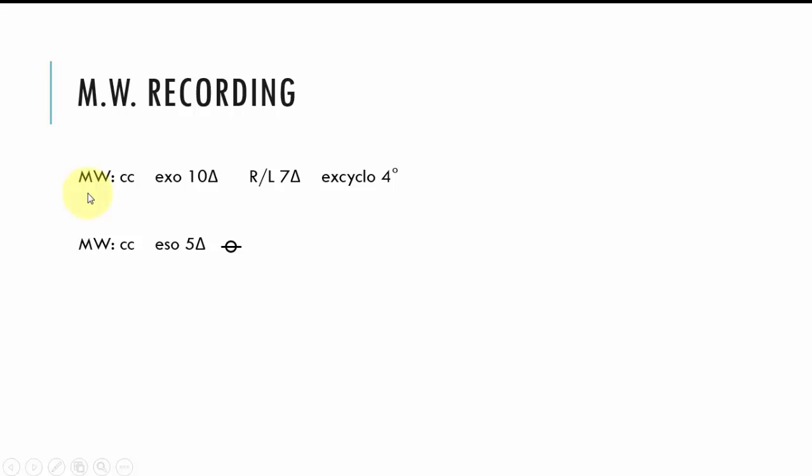Recording the Maddox wing: MW represents Maddox wing, we indicate whether the patient is wearing correction or not, and then we indicate the size of the deviation. So here we have exo of 10 diopters, and as I said earlier you'll need to clarify that the arrow was actually pointing to the 10 and was not between the 9 and the 11 as an example. Now we have right on left so there's a vertical deviation of 7 diopters, and here we have ex-cyclo at 4 degrees. Torsion is always measured in degrees.